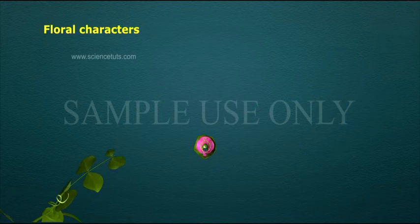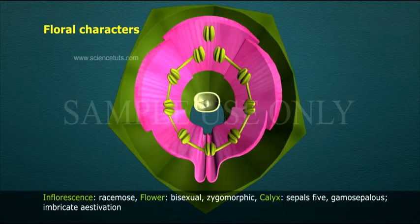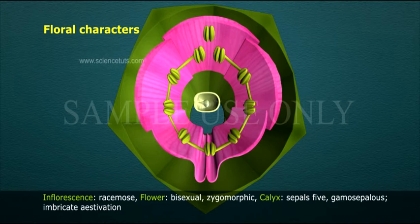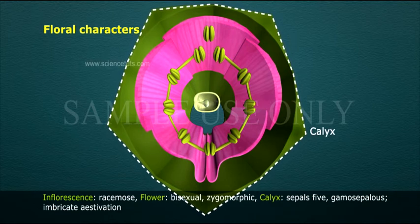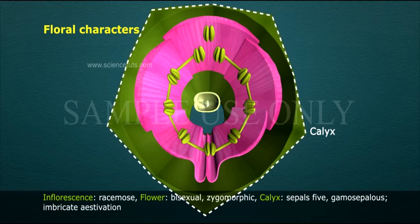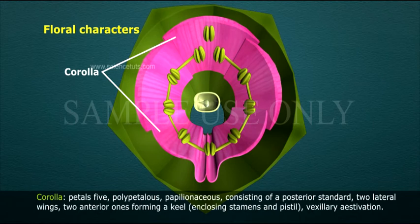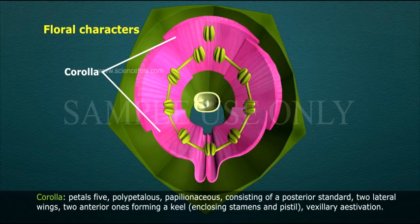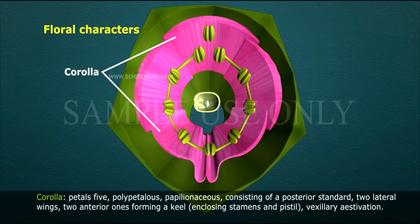Floral characters: Inflorescence racemose. Flower bisexual, zygomorphic. Calyx: sepals 5, gamosepalous, imbricate aestivation. Corolla: petals 5, polypetalous, papilionaceous, consisting of a posterior standard, two lateral wings, two anterior ones forming a keel, enclosing stamens and pistil. Vexillary aestivation.